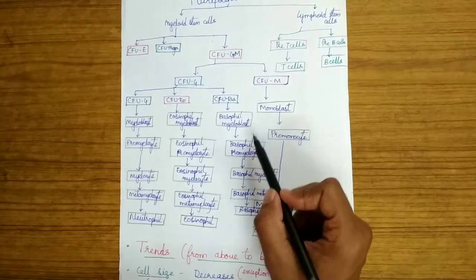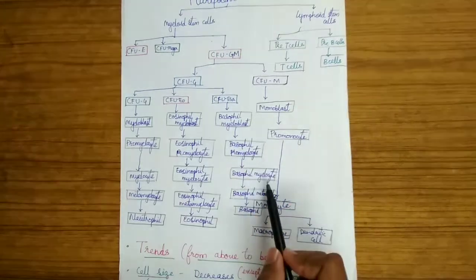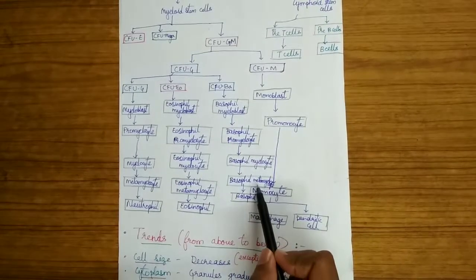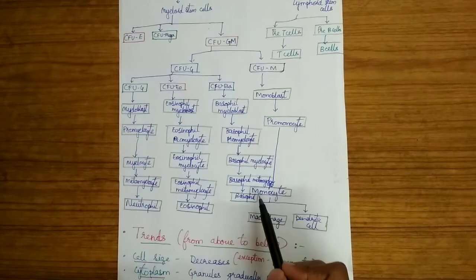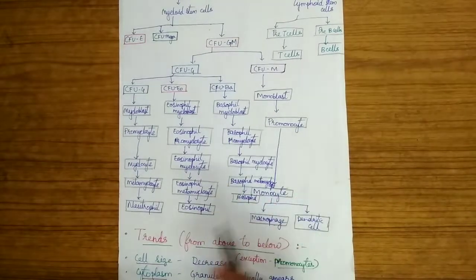From the blast cells they form the promyelocyte, then the myelocyte, the metamyelocyte and ultimately the granulocyte or the monocyte in both the lines.